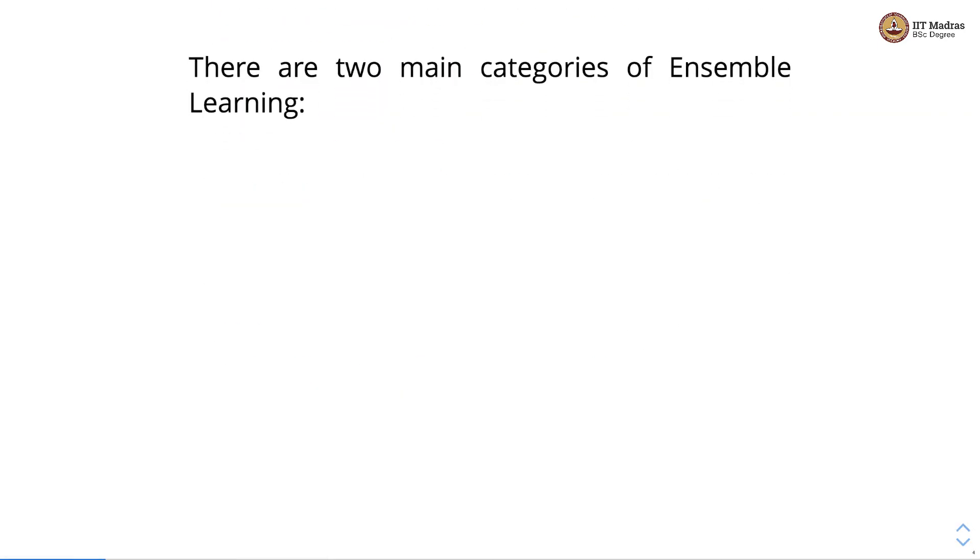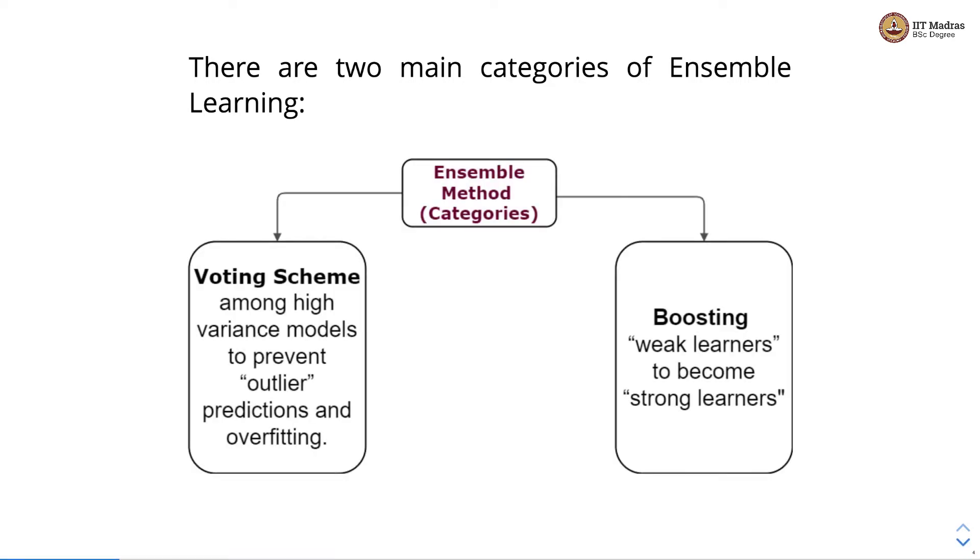There are two main categories of ensemble learning: voting and boosting. In voting, we use high variance models and combine them through voting scheme to prevent outlier predictions and overfitting. Whereas in boosting, we start by building weak learners and then combine them to make a strong learner out of these weak learners.